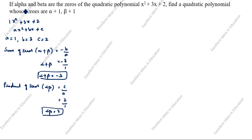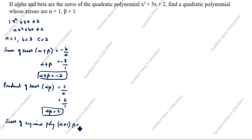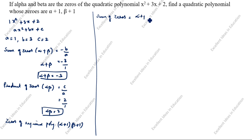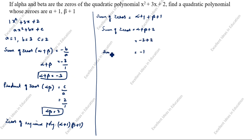What we need to find: a quadratic polynomial whose zeros are alpha plus 1 and beta plus 1. These are the zeros of the required polynomial. Sum of zeros equals (alpha plus 1) plus (beta plus 1), which equals alpha plus beta plus 2. The value of alpha plus beta is minus 3, so minus 3 plus 2 equals minus 1. So the sum of zeros is equal to minus 1.